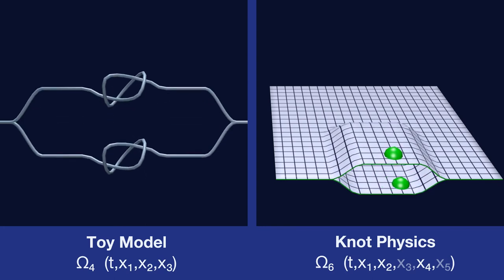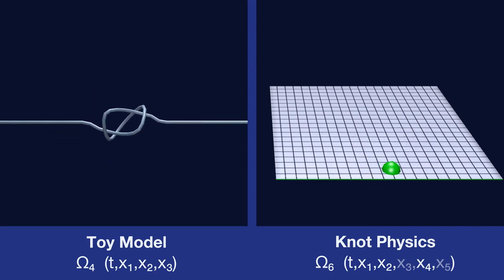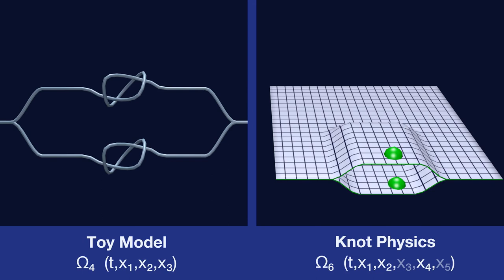We can imagine the situation with one real particle, for example one real electron, on a spacetime manifold that has many many branches. Because the particle is real, it would have one knot on every branch, and that means many knots.